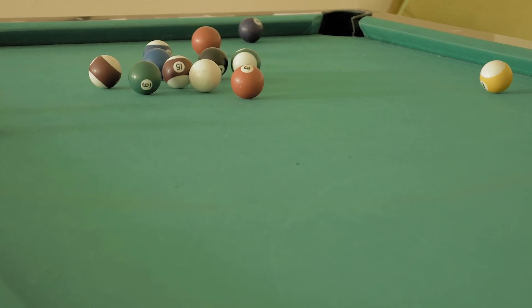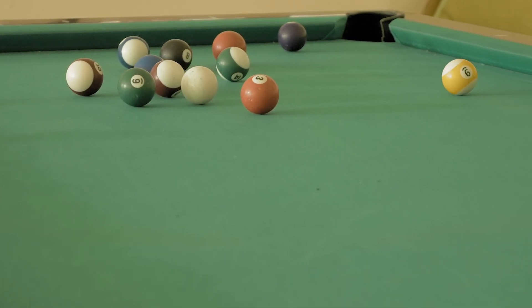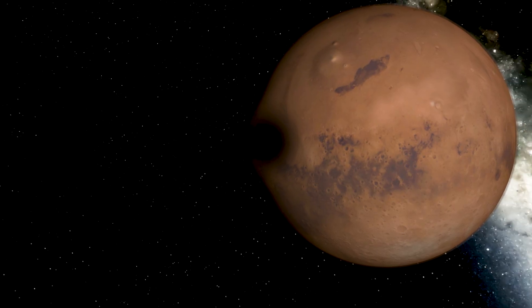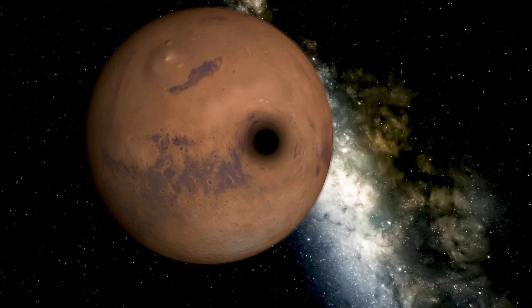Imagine Mars as a billiard ball on a table. If someone nudges the table just slightly, the ball will shift ever so slightly. That's what we're looking for, a small shift in Mars' orbit, like a ripple in space.